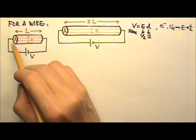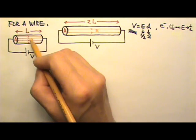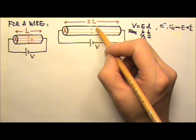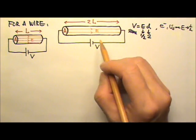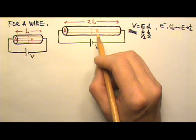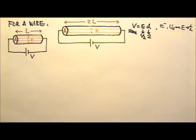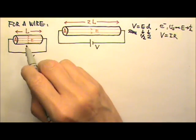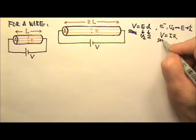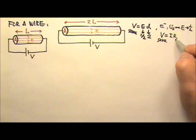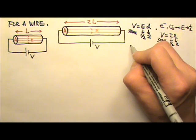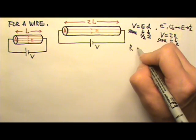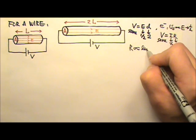The two wires have the same cross-sectional area, so there is the same number of free electrons at a cross-section. The same number of electrons flowing at half the speed means the current in this longer wire is half as much. Using V equals IR, the two wires have the same voltage, so the twice-as-long wire with half the current must have twice the resistance. This means the resistance of a wire must be proportional to the length of the wire.